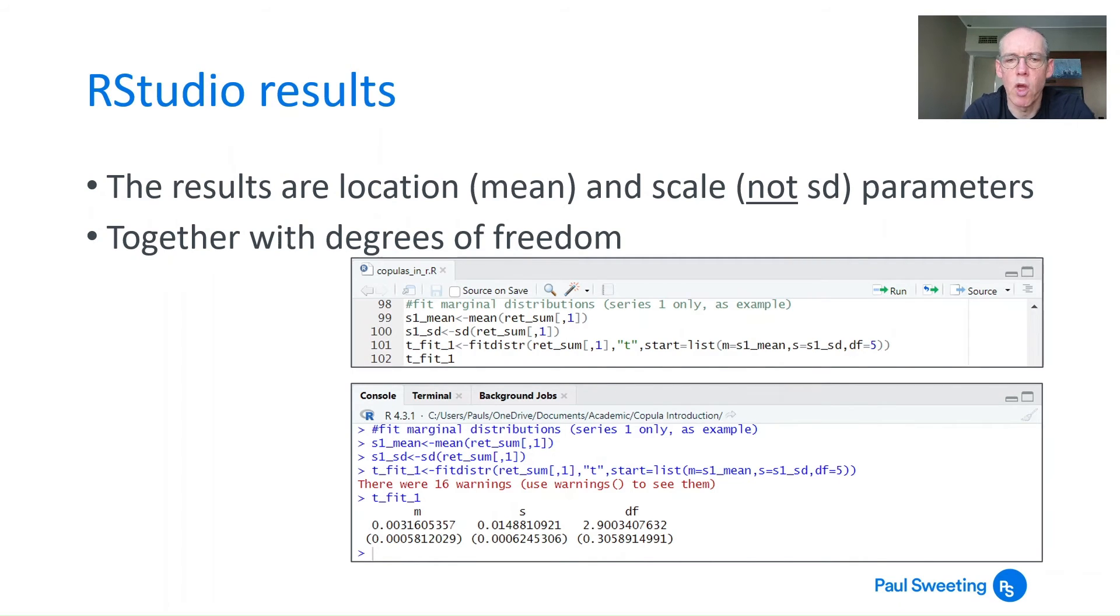The top panel shows the code in R. The bottom shows the results. You often get warnings when doing this - I don't worry too much as long as I get numbers. We've got the parameters and standard errors. The parameter for the mean is 0.003, for the spread factor is 0.014, and the degrees of freedom is 2.9, a bit lower than our estimate.